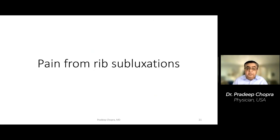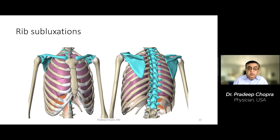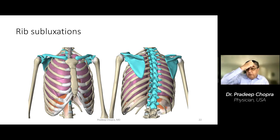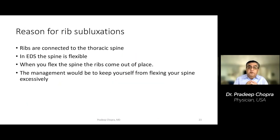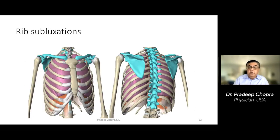A major problem we see a lot is rib subluxations. The pain from rib subluxations is excruciating. The ribs articulate with the thoracic spine at the back, making a joint. When you bend the spine, the joints become loose and the ribs come out of their place. Flexing the spine or moving laterally causes ribs to pop out from their joints — that's rib subluxation. For example, movement to the left will cause the ribs on the right side to sublux.